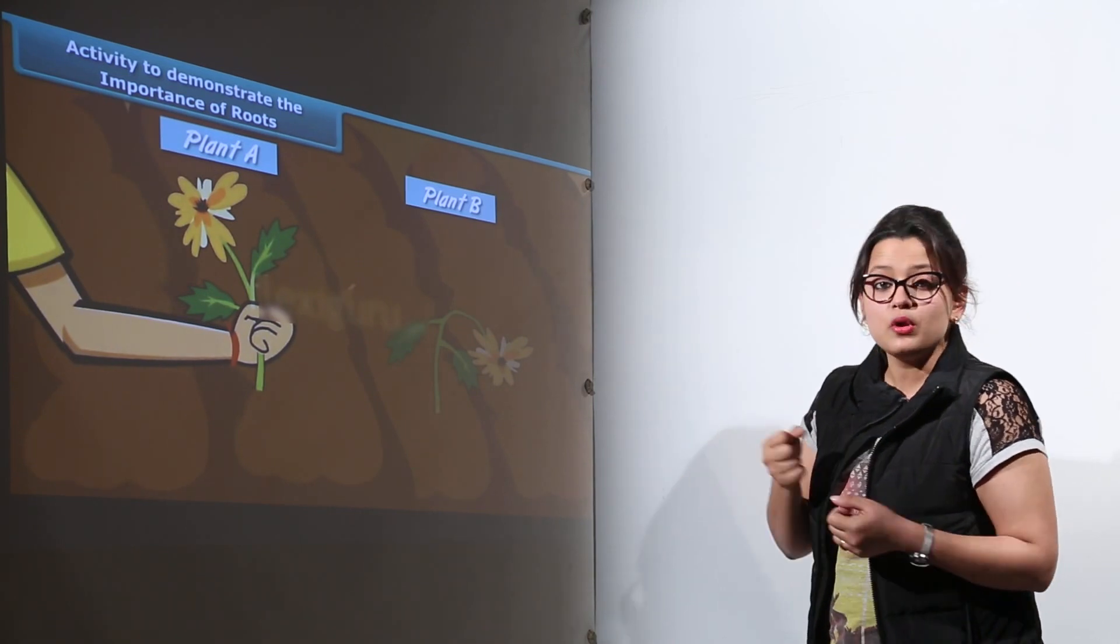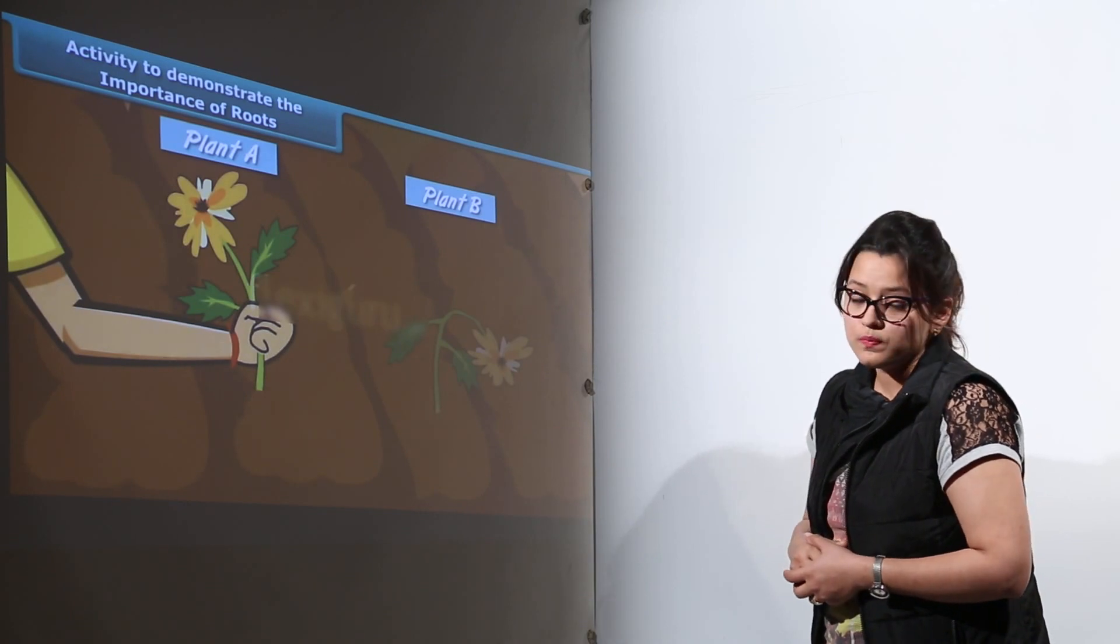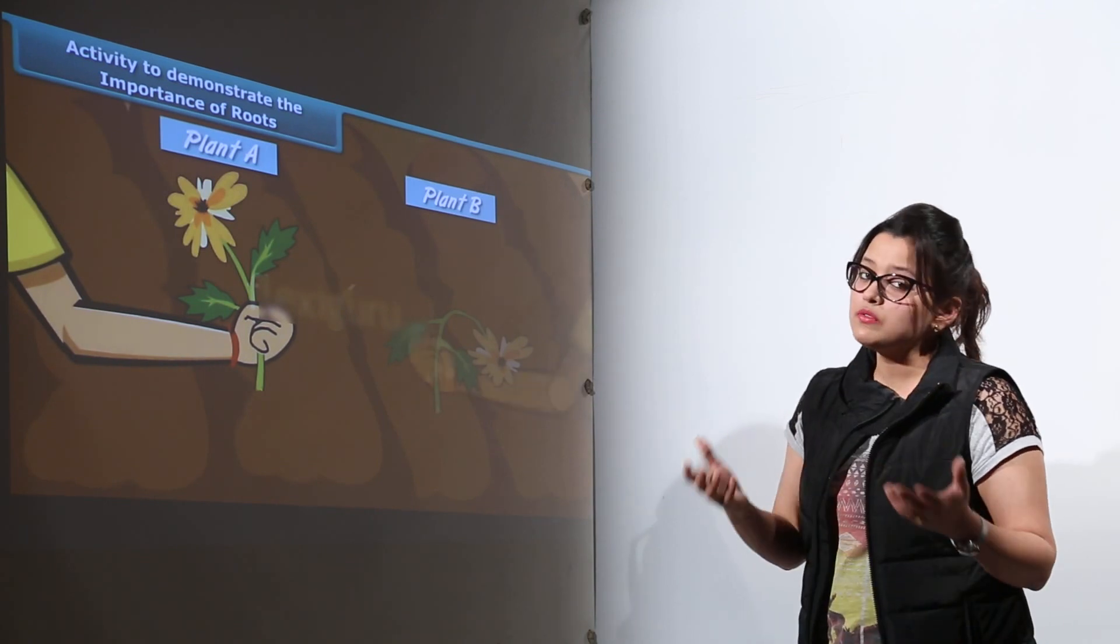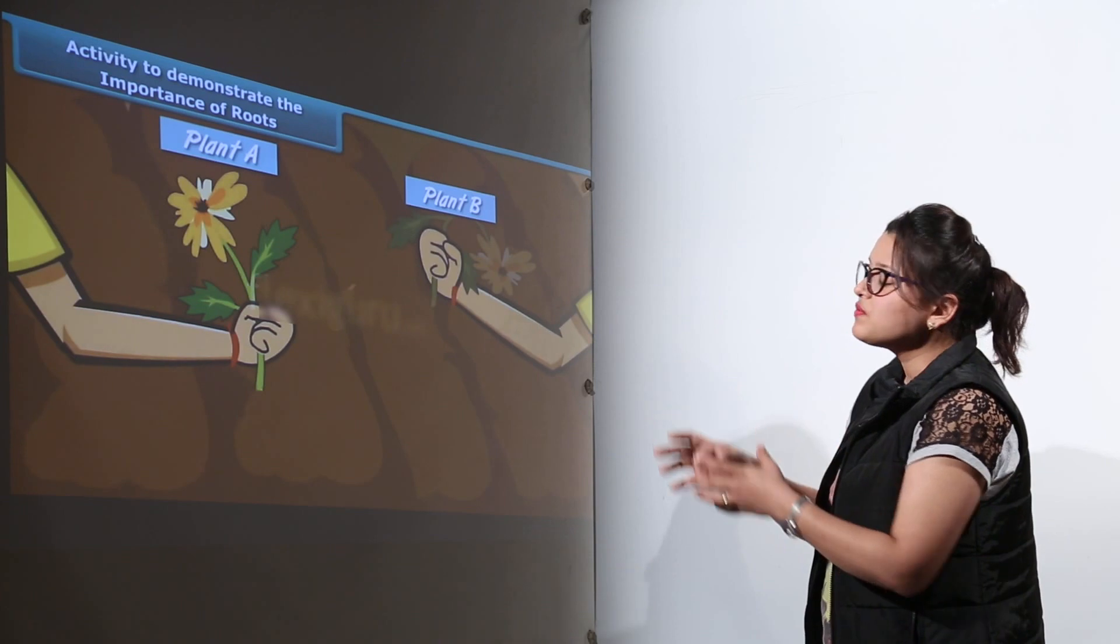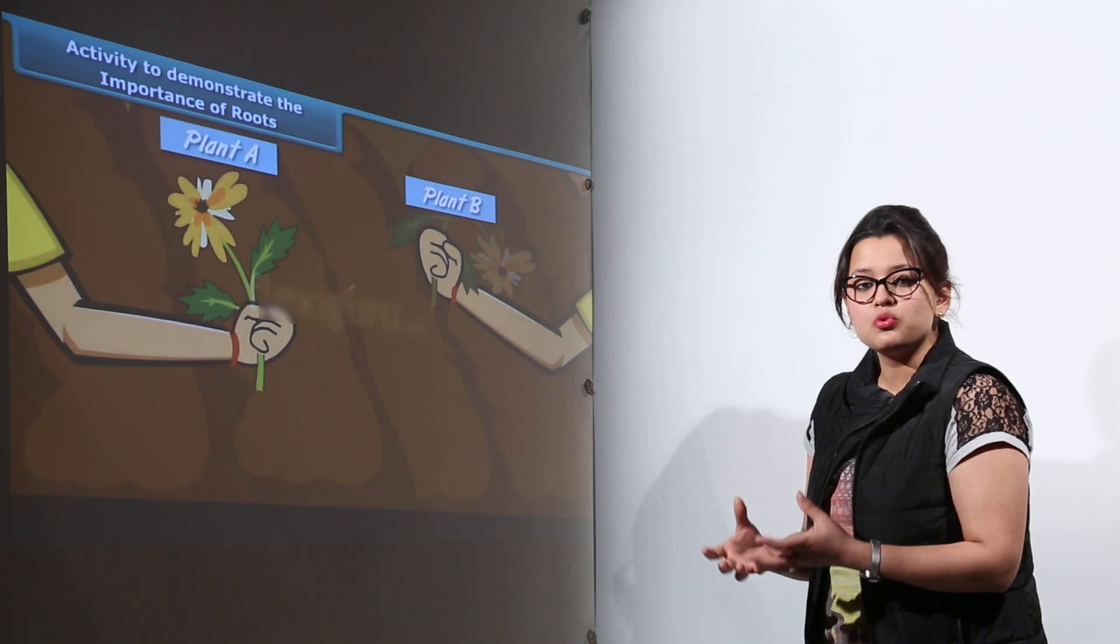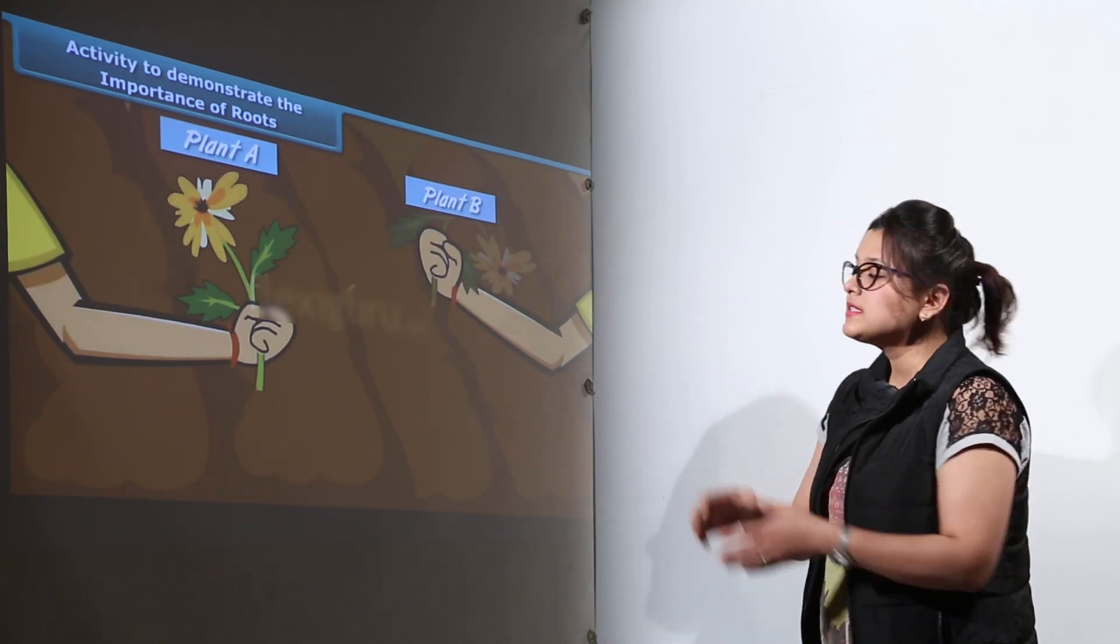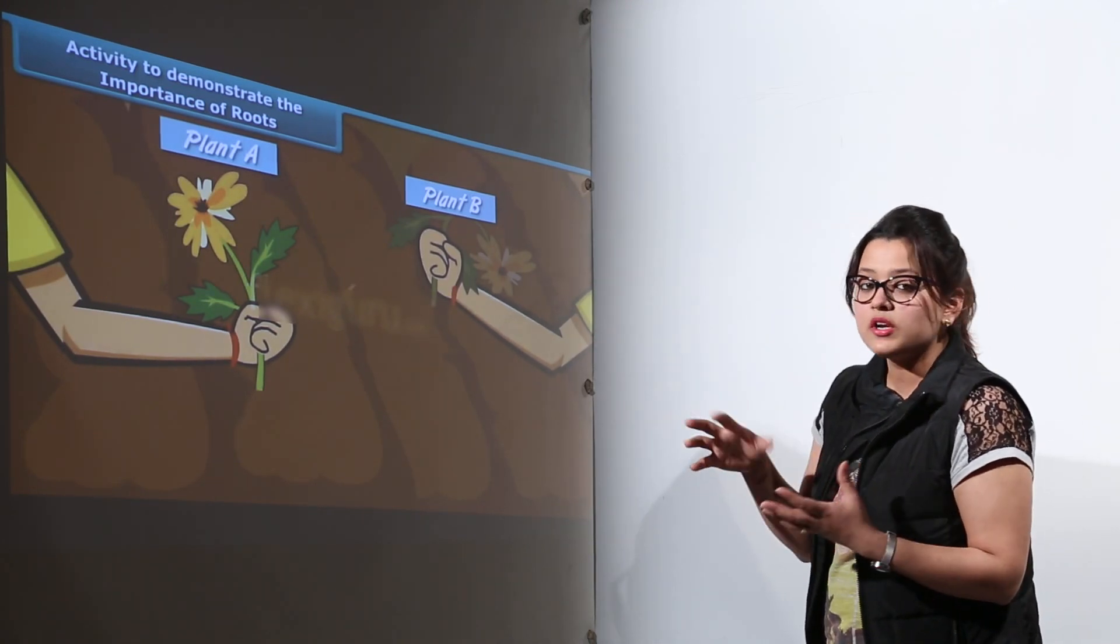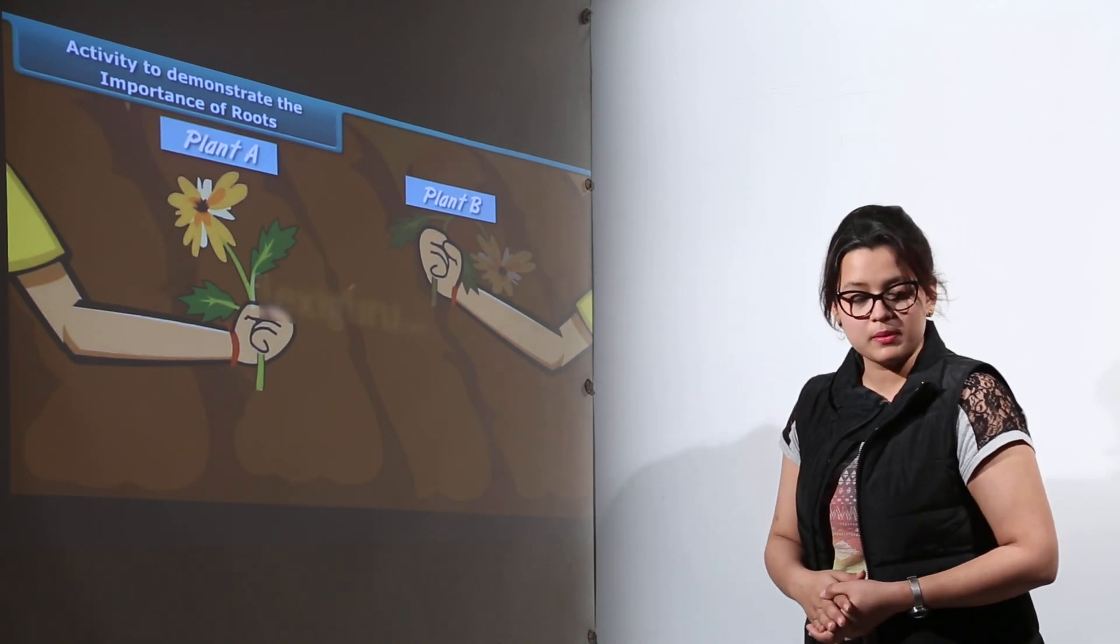Also, if you try to pull out plant A from the soil it will be very hard, but pulling out plant B will be very easy. This is because plant A is tightly held by the roots present in the soil, whereas plant B has no such roots and no grip to the soil. That is why roots are very important parts of the plant.